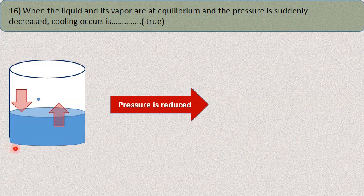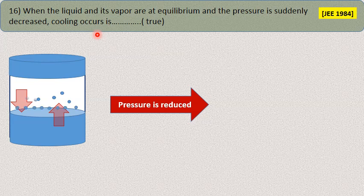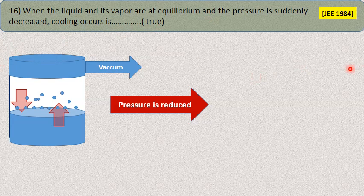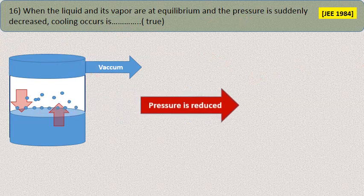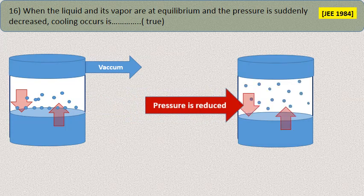A cartoon illustrates what happens when liquid and vapor are in equilibrium and pressure is suddenly decreased. Applying vacuum reduces the pressure, causing sudden expansion of gases. As a result of this sudden expansion, cooling occurs — this is the basis of the Joule-Thomson effect. So yes, cooling does occur in the system when pressure is suddenly decreased.